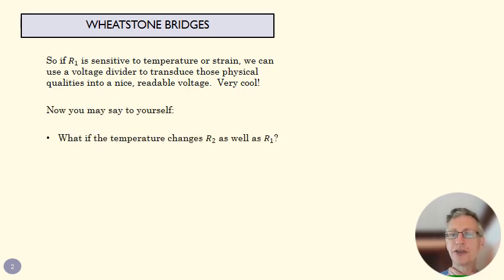If we have a resistor that's sensitive to temperature, what if R1 changes but R2 changes as well? Then our known R2 value becomes less known - it becomes unknown - and so our equation doesn't work anymore.